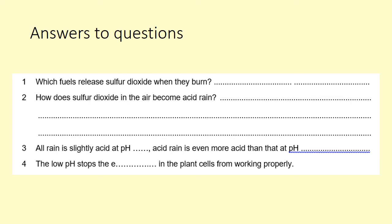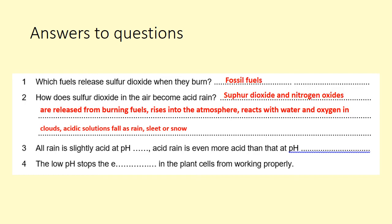Those answers then. Which fuels release sulphur dioxide when they burn? Fossil fuels. How does sulphur dioxide in the air become acid rain? Sulphur dioxide, along with nitrogen oxides released when fossil fuels burn, rises into the atmosphere. They react with water and oxygen in the clouds to form an acidic solution which falls as rain, sleet or snow. All rain is slightly acidic at a pH of about 6, but acid rain pH is more like 5. The low pH stops the enzymes in plant cells from working properly.